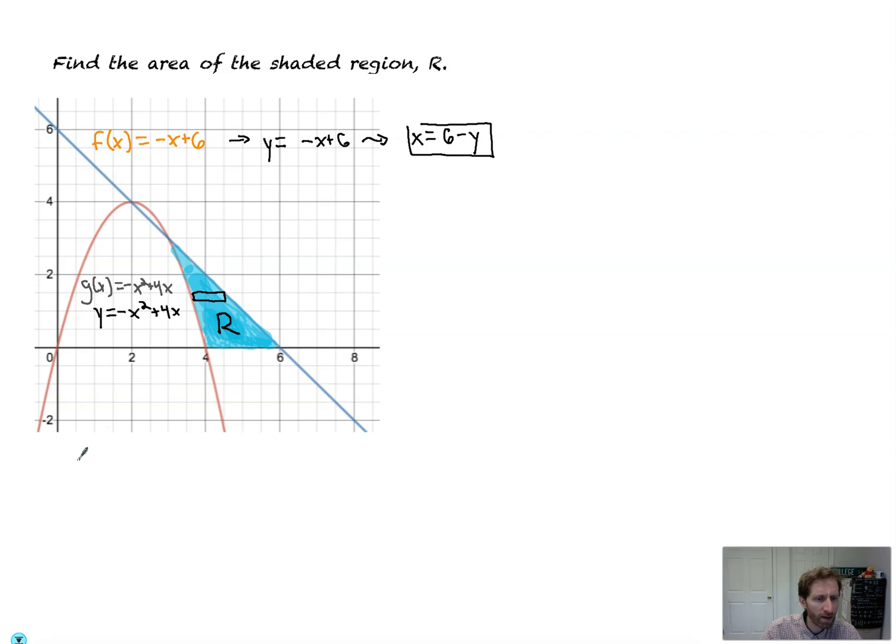And so actually, you know what? No. I'll factor out the negative. So we get y. Yeah, no. Let's multiply both sides by negative 1. That'll be easier. Minus y equals x squared minus 4x. To complete the square, you divide this number by 2.